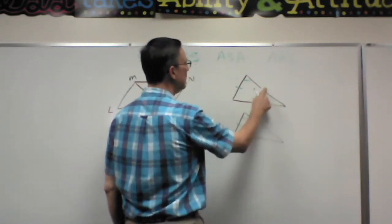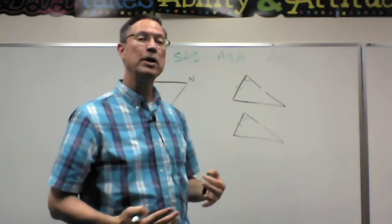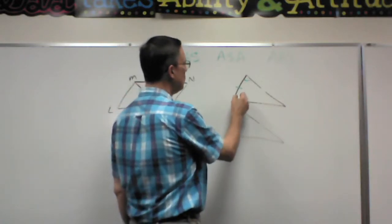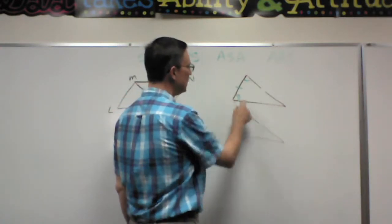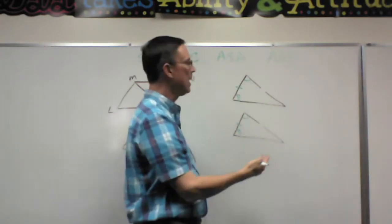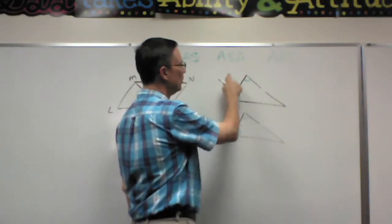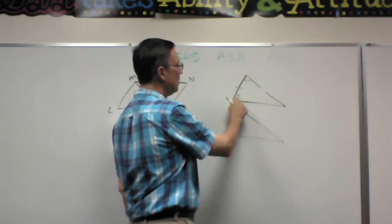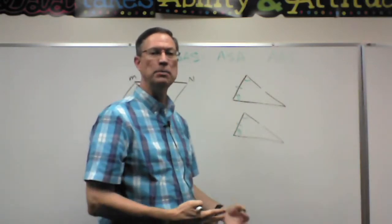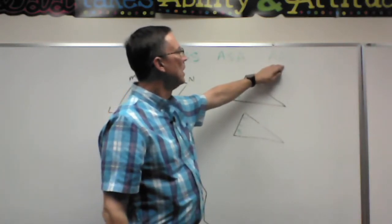All right, let me erase these markings here. Let's pretend, let's talk about the angle side angle. I can use that postulate to prove the two triangles are congruent if I know that this angle is congruent to this angle, this angle is congruent to this angle, and the side that's between these two are congruent. So angle, two angles, and the side that's included—included means between those two.